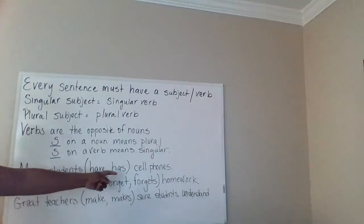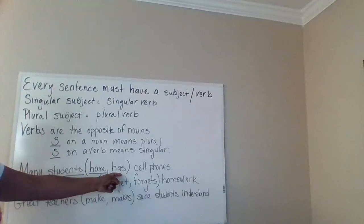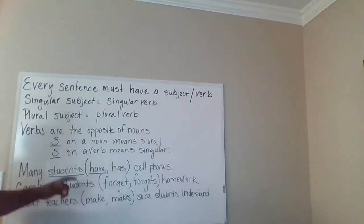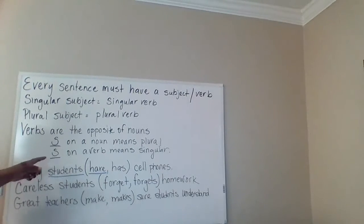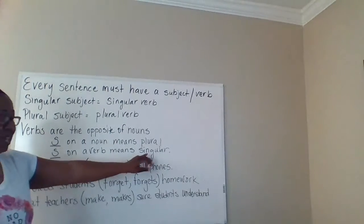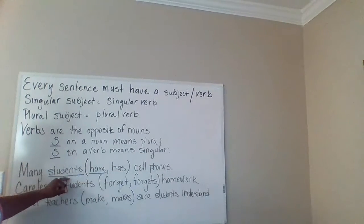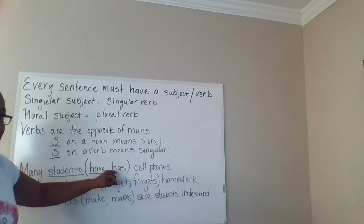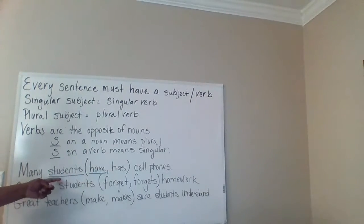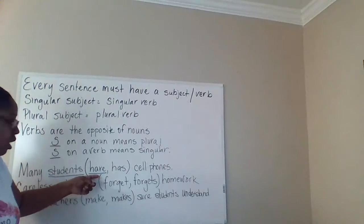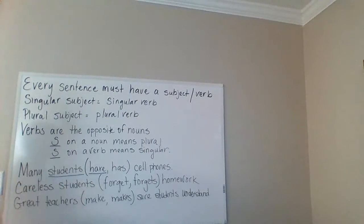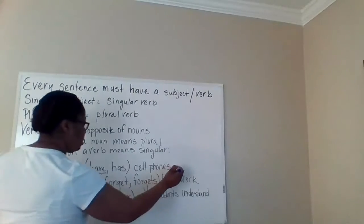Now, had we chosen 'has,' we would be in disagreement because 'has' has an S on it. Remember that verbs are the opposite of nouns, so an S on a verb means that it is singular. Students is plural, has is singular — so they would be in disagreement. So now that we have the subject 'students' — plural — and the verb 'have' — which is plural — we're in agreement. So this sentence is correct.